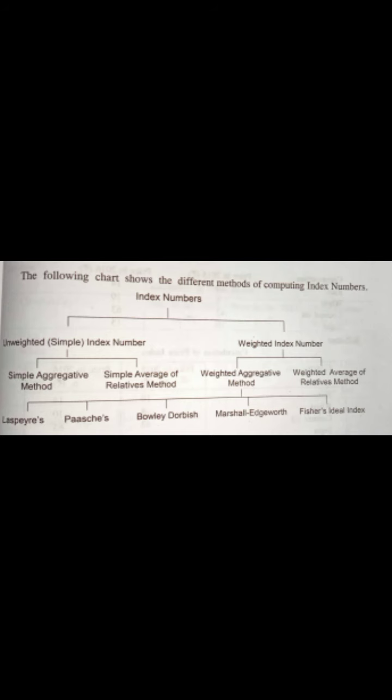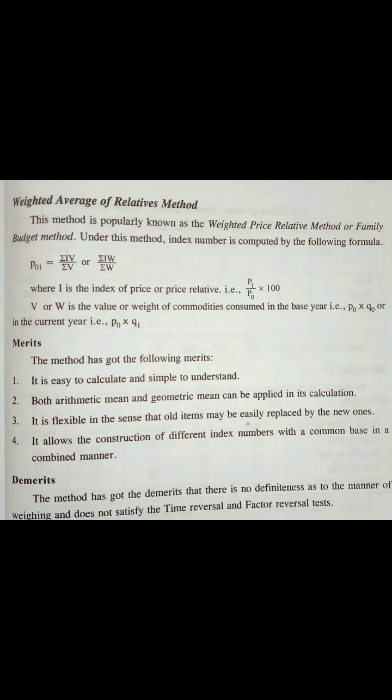Similar to your unweighted index numbers, there also we had seen aggregate and average method. Here also we have an average method. According to that only we have to follow here also. So this method is also known as the family budget method. You could get problems asking to find the family budget or use family budget method and find the index number. Basically this means you need to find the average of relative method. This is a weighted method.